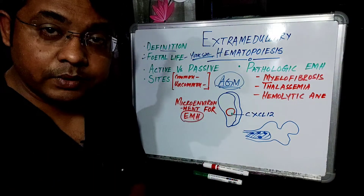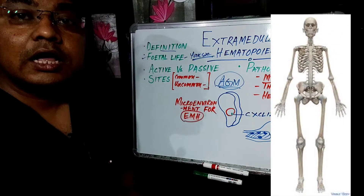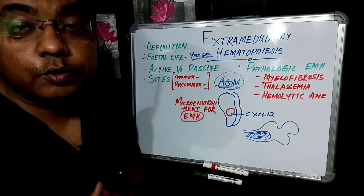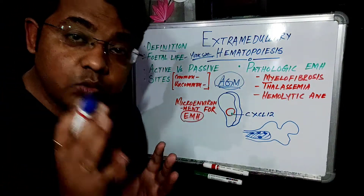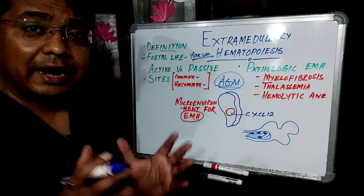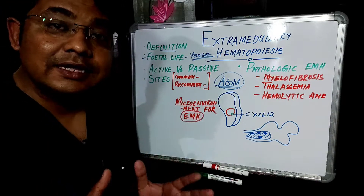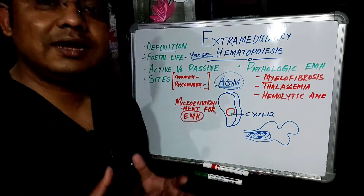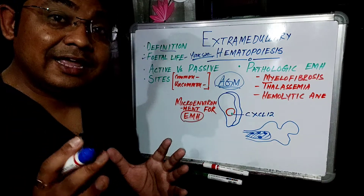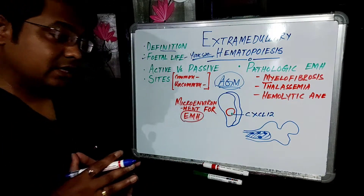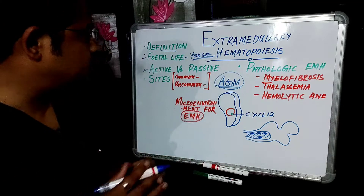During birth, the principal site for hematopoiesis is bone marrow, and all the bones of our body are capable of producing hematopoietic elements at birth. After that, the medullary cavity of all bones is gradually replaced by fatty tissues, and during adult life only the bones of the axial skeleton — skull, vertebrae, ribs — and also the pelvic bones remain capable of forming mature hematopoietic elements.